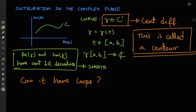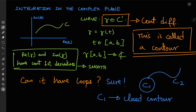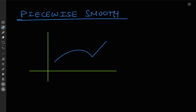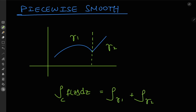You might have some questions about contours — like can they have loops? Yes, sure, why not. For example, the contour shown can be considered as the union of two different contours, C1 and C2, where C1 is a closed contour. For evaluating the integral along such a contour, you just apply the relevant theorems to each part and add them up. The symbols for contour integrals are standard, and for integrals along closed contours we have a little circle around the integral sign. We can also make contours that are piecewise smooth by concatenating smooth curves. The contour can be broken down into gamma 1 and gamma 2, both smooth and parameterized accordingly, and the integral is the sum of the integrals along gamma 1 and gamma 2.